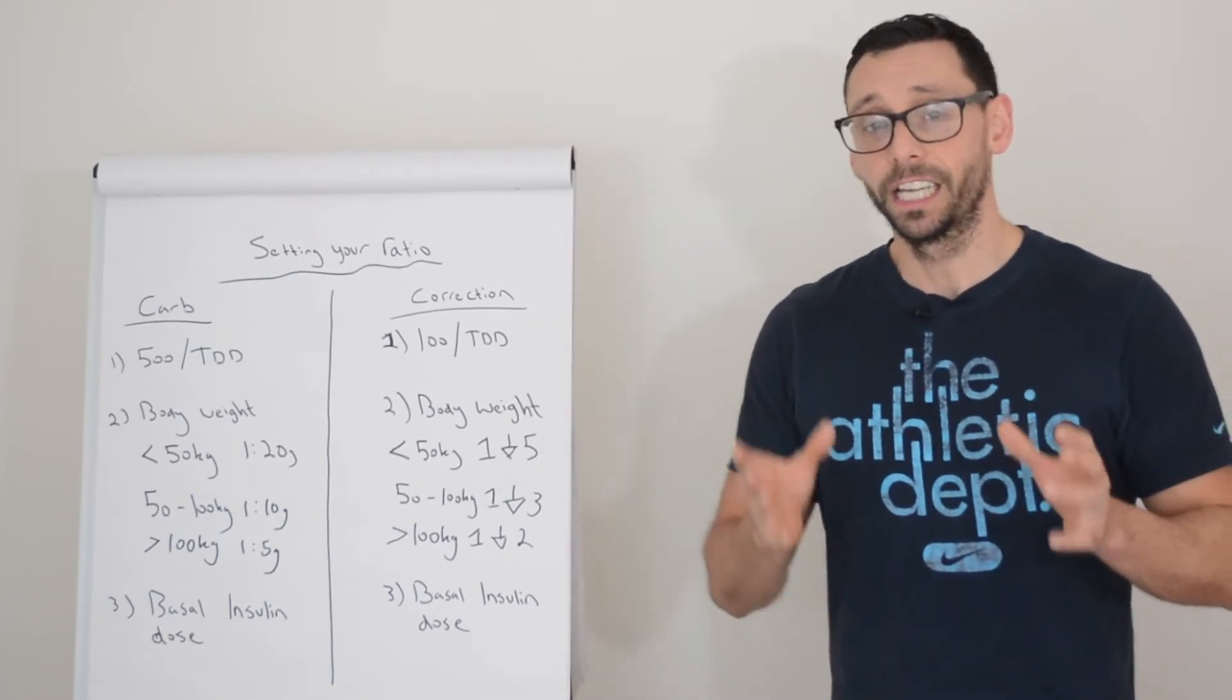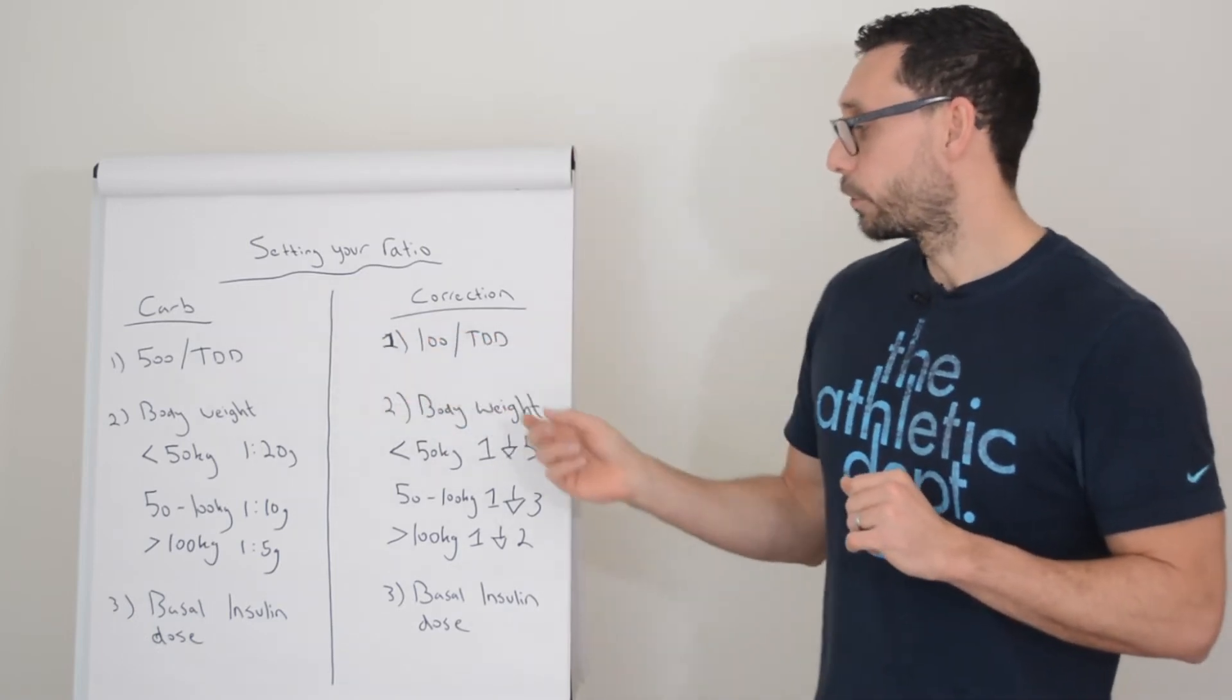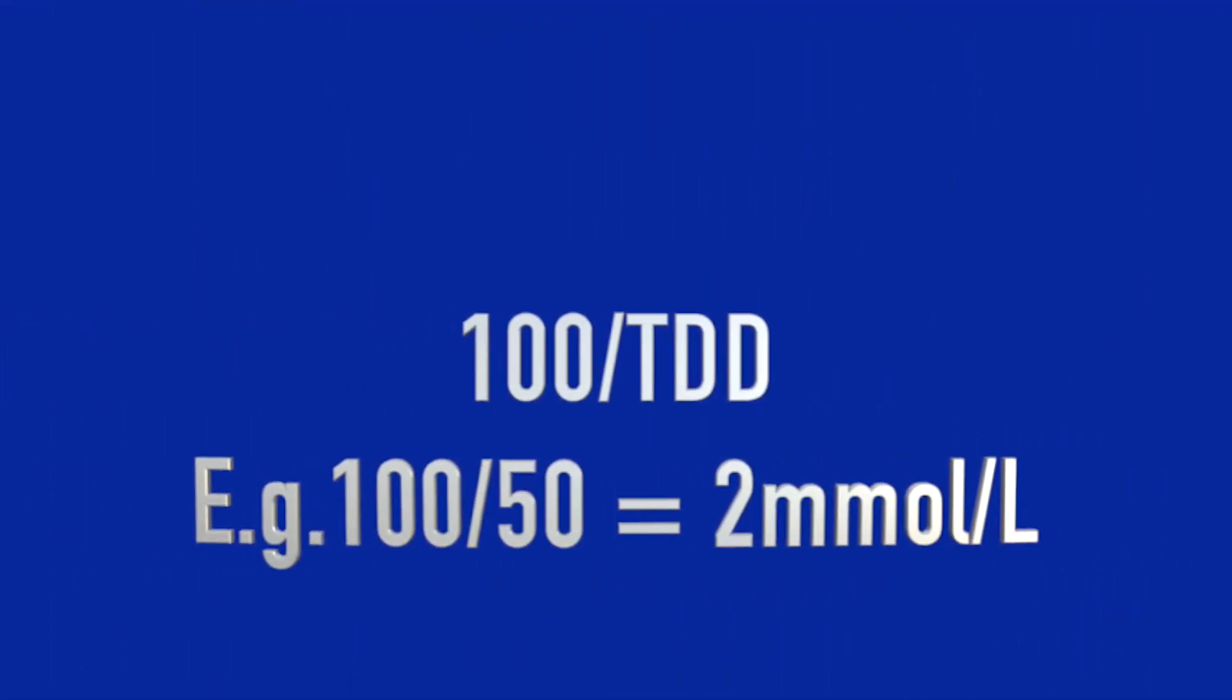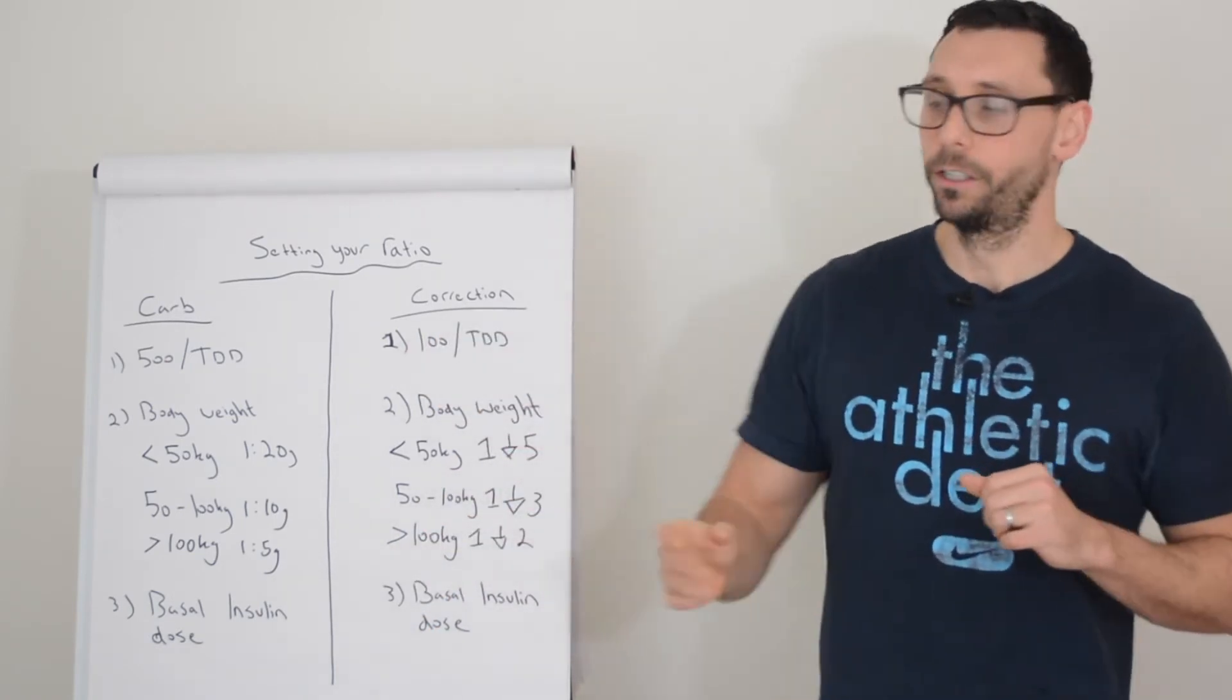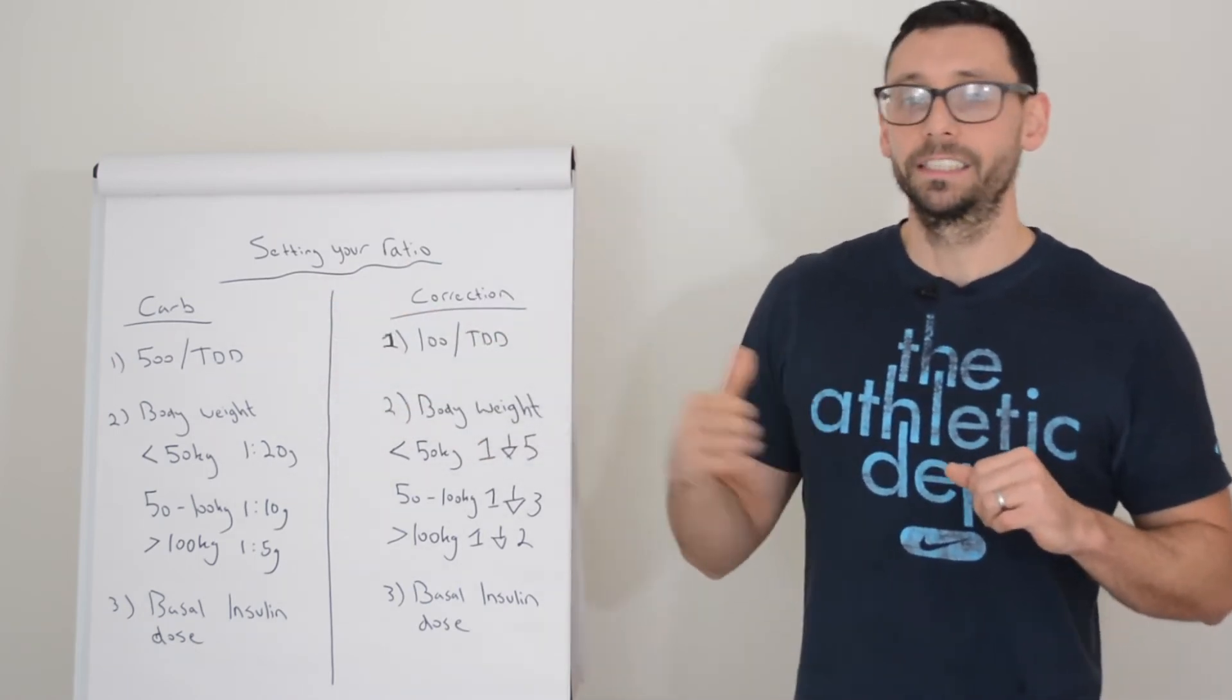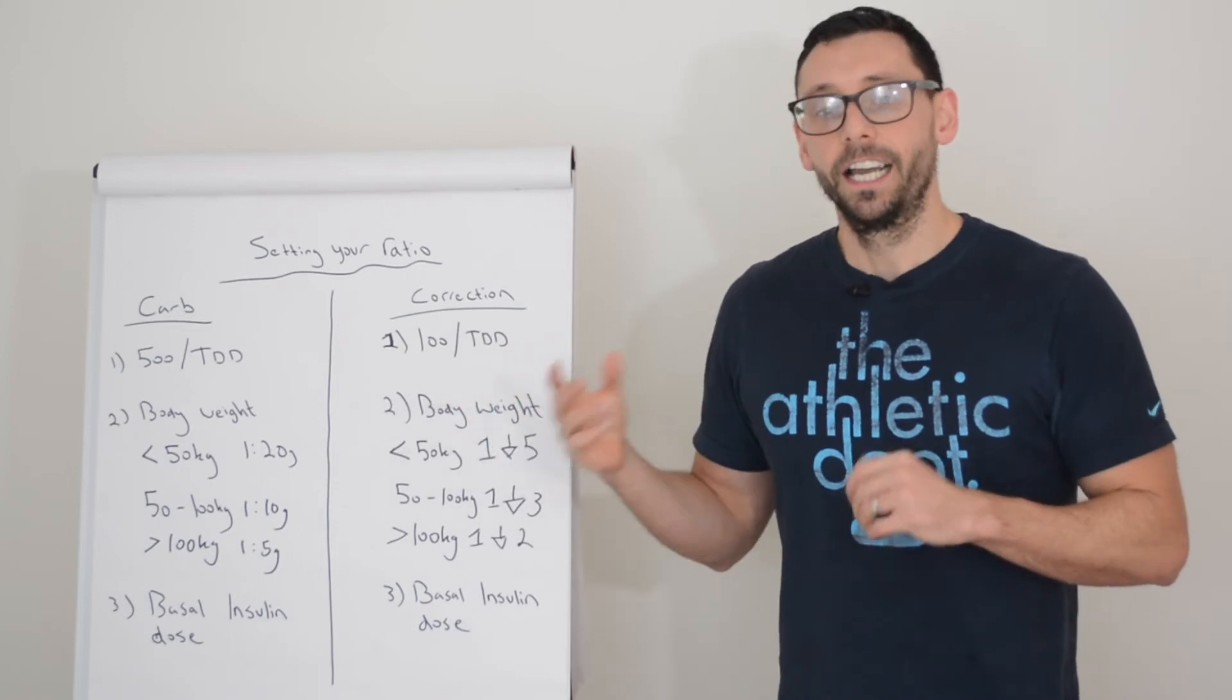Which now moves us on to correction doses. It's a very similar principle, the only difference is we change some numbers. The first example here is rather than using the 500 rule, we use the 100 rule. So you divide 100 by your total daily dose and that will give you a correction ratio. Exactly the same principle: total up your total insulin including both your background and your rapid insulin, and then take 100 and divide it by that. There's your ratio. The same drawbacks apply in terms of what if your insulin dose is incorrect. So again, take it with a pinch of salt, particularly if you've been finding that your glucose levels are suboptimal. Some people will use the rule of 130 again, but we'll just stick with 100 because it's the most commonly used.